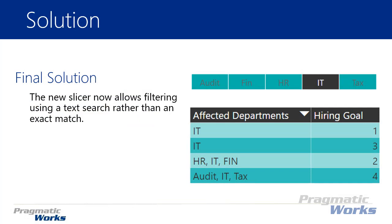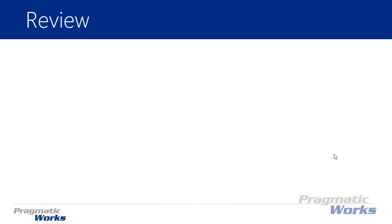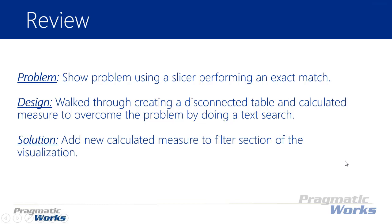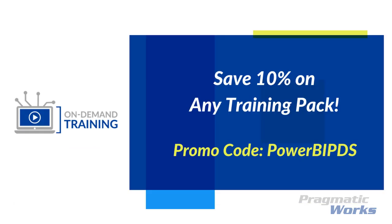The final solution is a new slicer that allows filtering using a text search rather than an exact match. To review: the problem was using a slicer that performed only an exact match. We walked through creating a disconnected table and a calculated measure that allows us to overcome the problem by doing a text search. The solution was to take that calculated measure and add it to the filter section of the visualization — if it equals True, we know it exists and return those records; those that don't return True are filtered out. Thanks for watching, and if you're interested in formal training, feel free to use the promo code on screen and visit pragmaticworks.com for on-demand training.